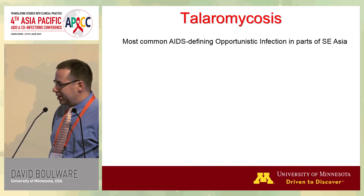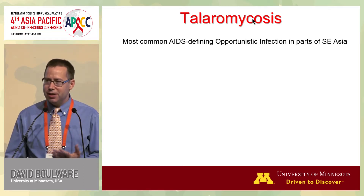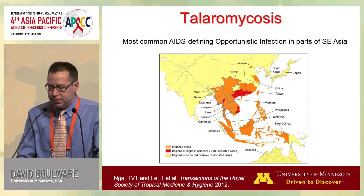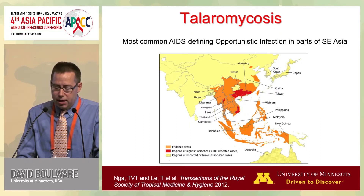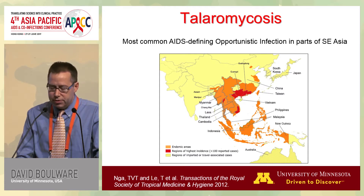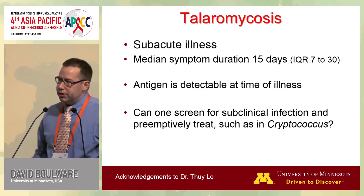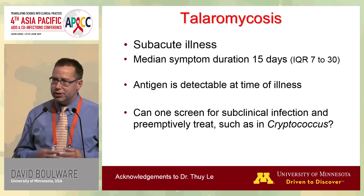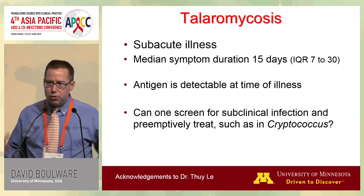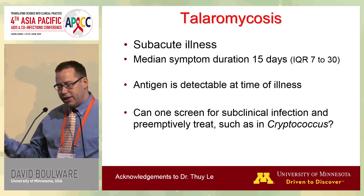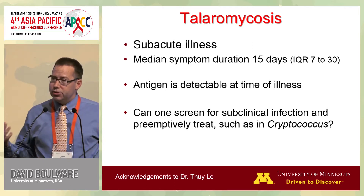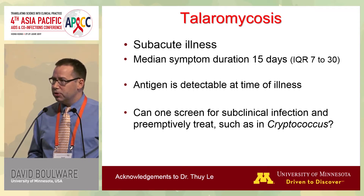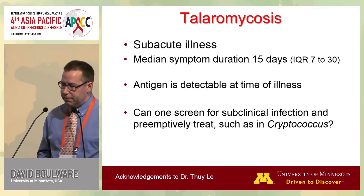Now talking about Talaromycosis — it's one of the most common AIDS-defining OIs in parts of Southeast Asia, particularly in southern China, Vietnam, and northern Thailand historically. It's a subacute illness with median symptom duration of about two weeks before presentation, similar to crypto and histoplasma, where people have had low-grade smoldering symptoms. There's an antigen detectable at time of illness, raising the question: can we apply the same screening principle we used for cryptococcus?